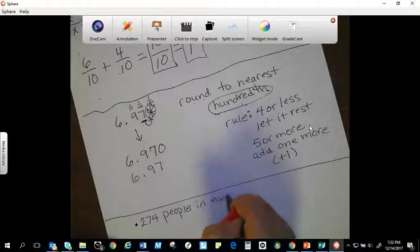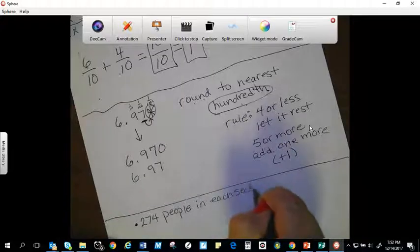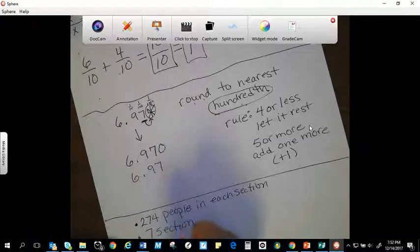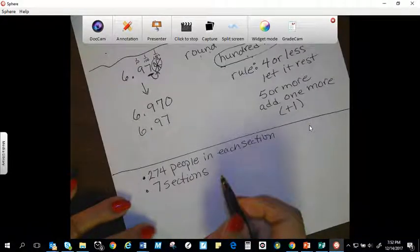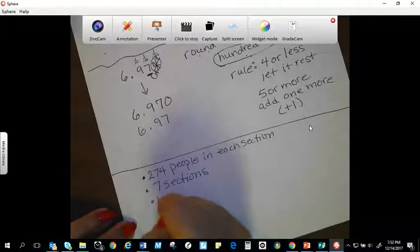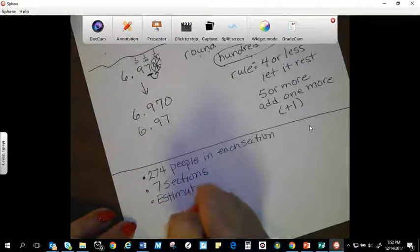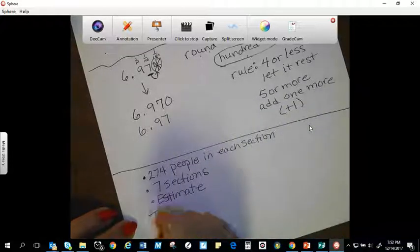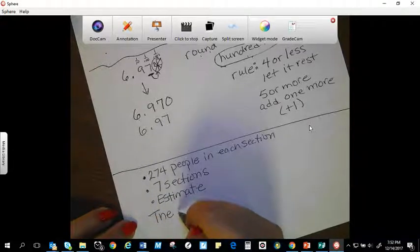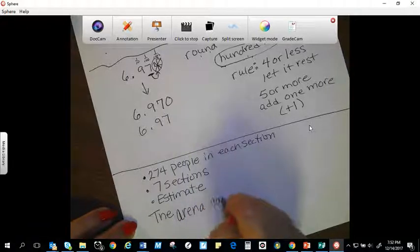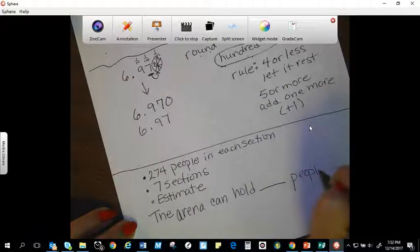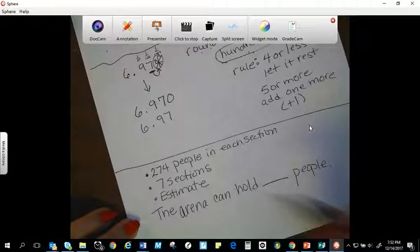in each section. I have seven sections. My question is asking me, I need to estimate, that's another key, estimate how many people the arena can hold. So I'm going to rephrase that to a statement. The arena can hold blank people. Now I know what my question is asking me. So I bulleted this here.